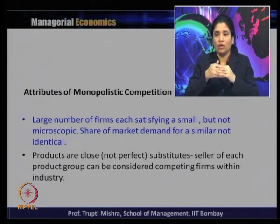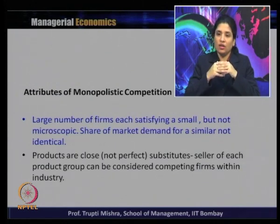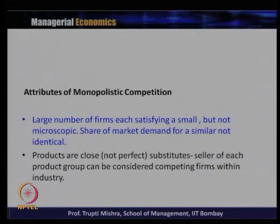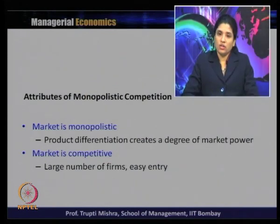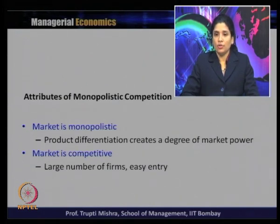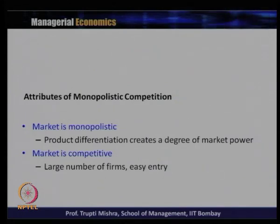Each product is different from the other in terms of some components. Sellers of each product group can be considered competing firms within the industry. The market is monopolistic because product differentiation creates a degree of market power — each product is a single product with no close substitute. The market is also competitive because there are large numbers of firms and easy entry into the market.